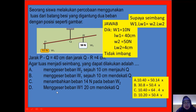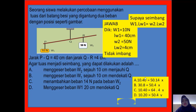Yang terakhir, yang D: menggeser beban W1 mendekati titik tumpuh, suruh maju. Tadinya 40 suruh maju 20, jadi tinggal 20. Berarti 10 dikali 20 sama dengan 50 dikali 4. Ya, 200 sama dengan 200. Berarti yang D benar. Yang sabar satu per satu, yang teliti juga. Jawabannya adalah D.